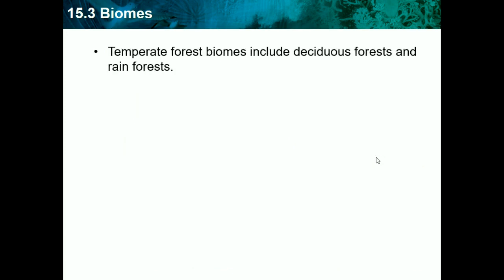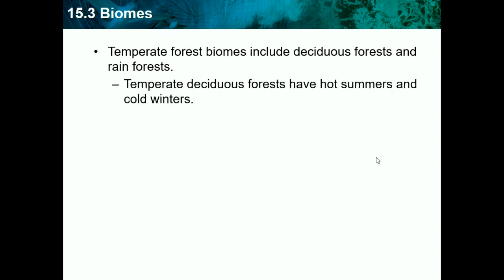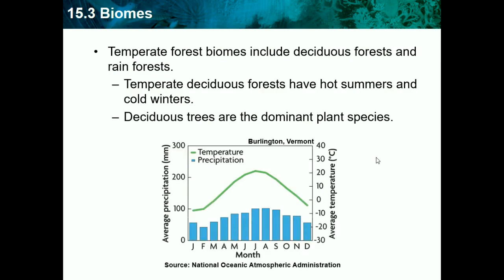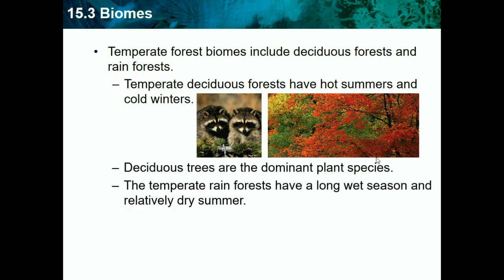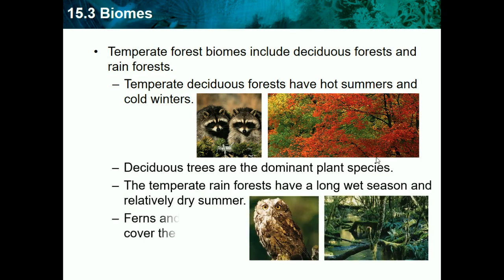Temperate forest biomes include deciduous forest and rainforest. Deciduous trees are trees in which the leaves fall off — so not evergreen. Temperate deciduous forests have hot summers and cold winters, with deciduous trees as the dominant plant species. Temperate rainforests have long wet seasons and relatively dry summers, with ferns and mosses covering the forest floor.